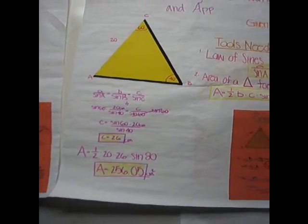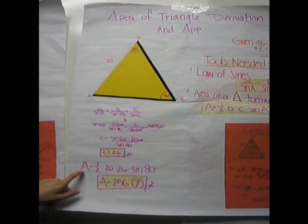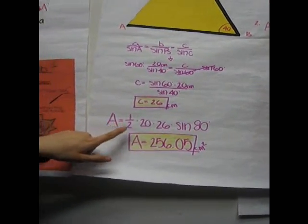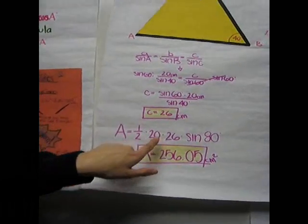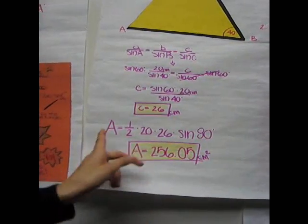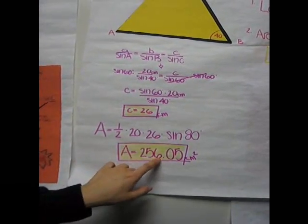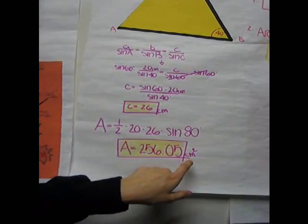And after you get the side, you plug it into the area formula, which is the area equals one-half times 20 times 26 times the sine of 80. And when you multiply all of that out, you get 256.05 centimeters squared.